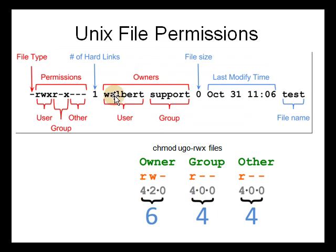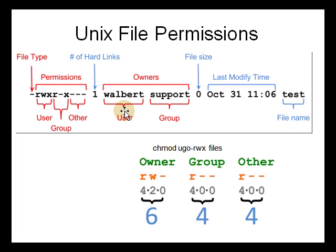The first thing we need to know is about Unix file permissions. Every file has a bunch of permissions associated with it. First, the file has an owner, and that owner belongs to a group or multiple groups. So this file 'test' is owned by the user 'walbert' and the group is 'support' — these are the users and groups of the file.